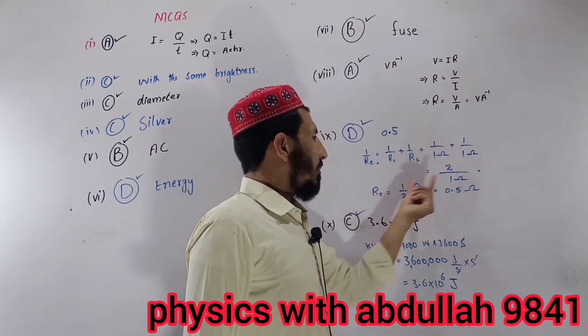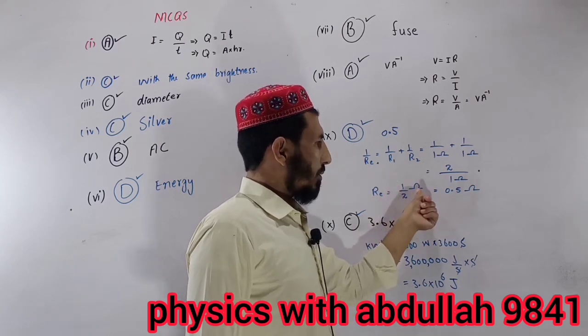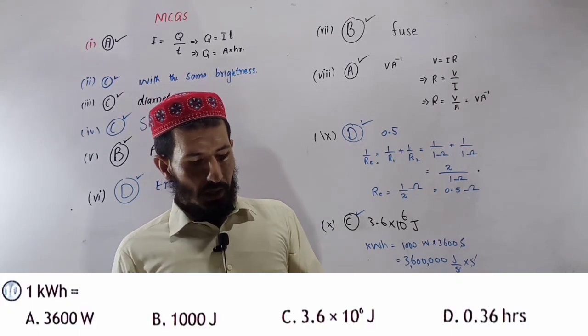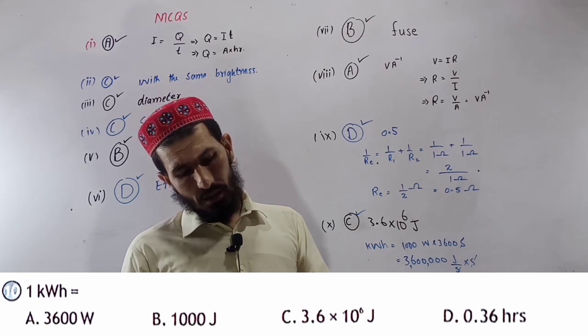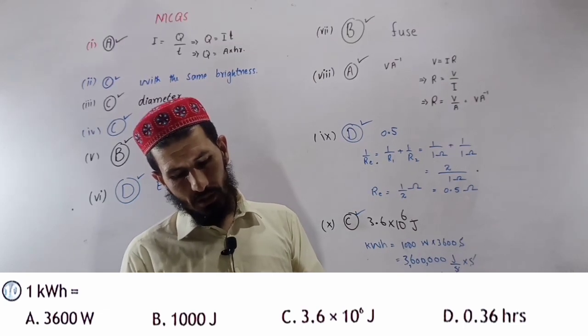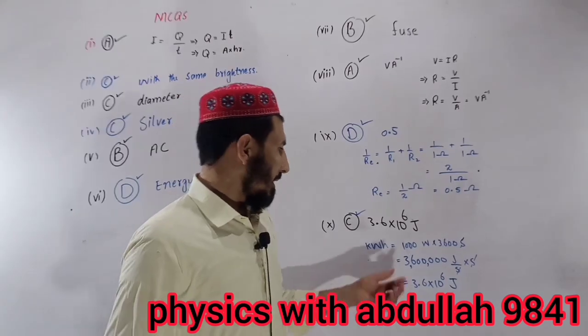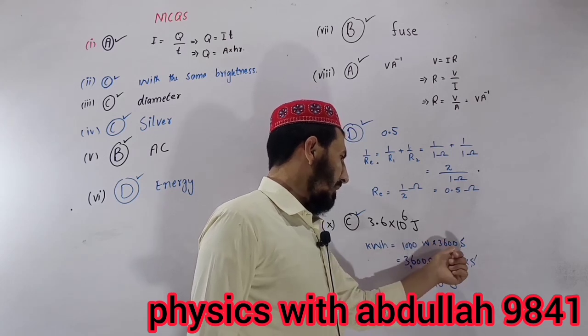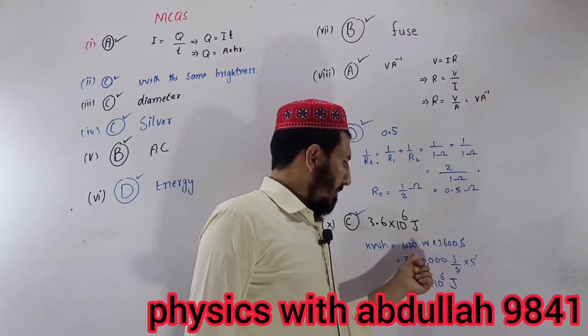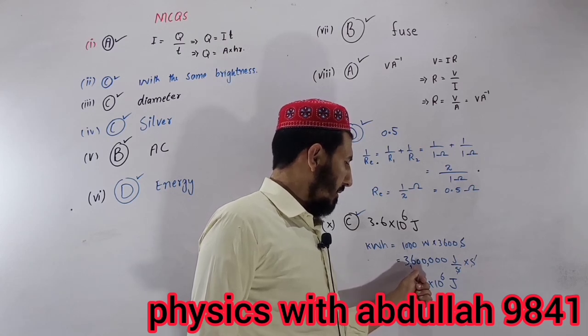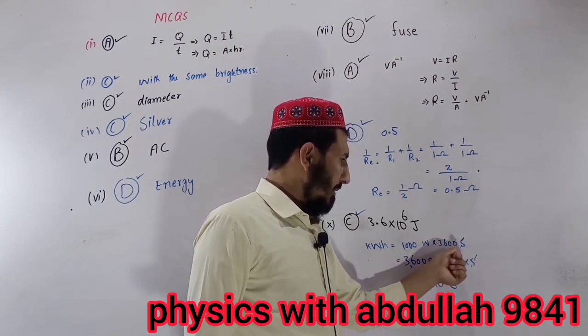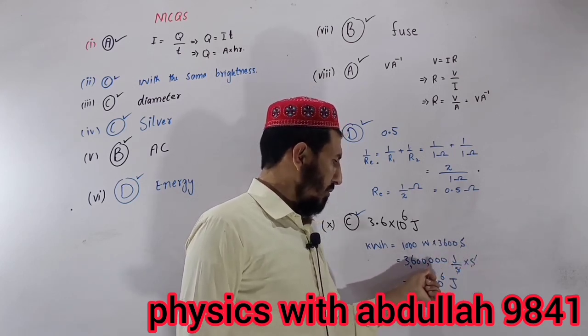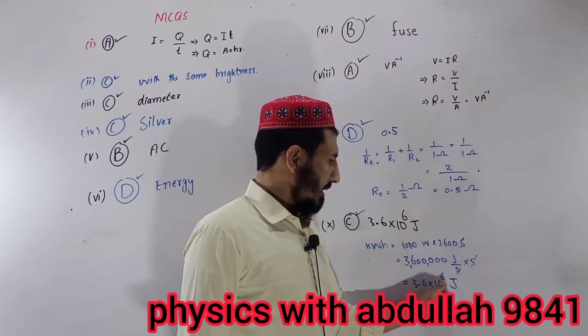One kilowatt-hour is equal to 3.6 times 10 to the power 6 joules. That's option C. 1 kilowatt is 1000 watts, and 1 hour is 3600 seconds. So 1 kilowatt-hour equals 1000 joules per second times 3600 seconds, which equals 3.6 times 10 to the power 6 joules.